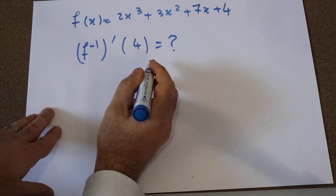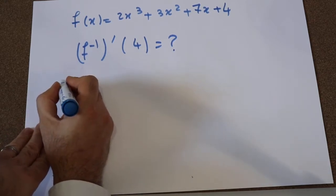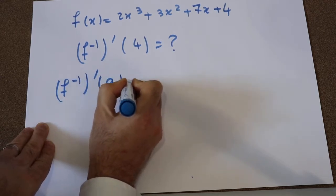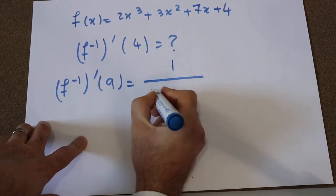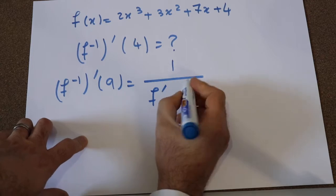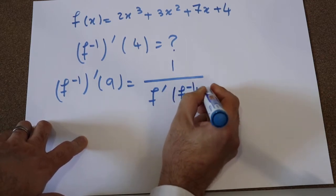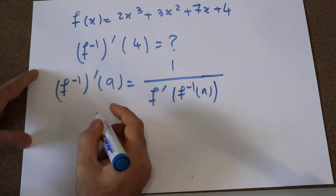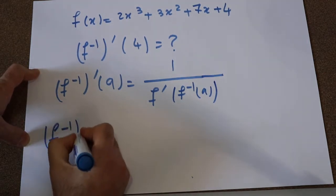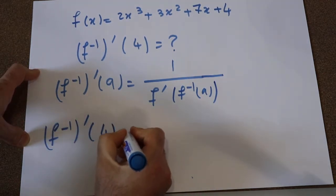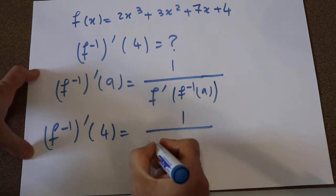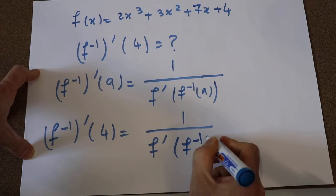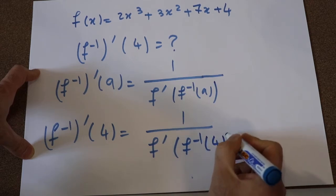To solve this question, you need to use this formula: the derivative of the inverse of a function at point A is equal to 1 divided by the derivative of the function at the inverse of that function at point A. So therefore, f⁻¹ prime at point 4 is equal to 1 divided by the derivative of function f at f⁻¹(4).